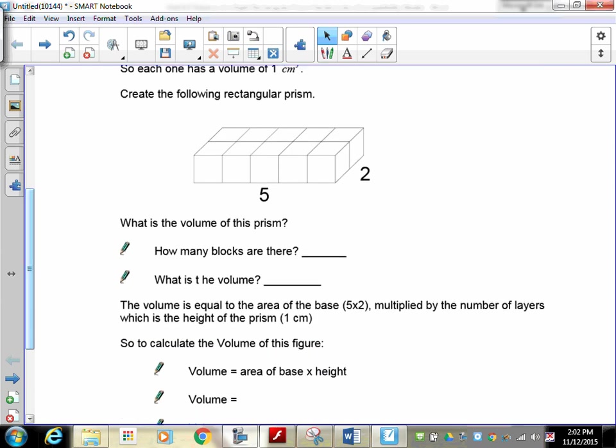You've got your 2x5 created. How many blocks are there? If you count them, you'll see that we've got 1, 2, 3, 4, 5, 6, 7, 8, 9, 10. Now remember, we're talking blocks, not sides. So there's 10 blocks there.